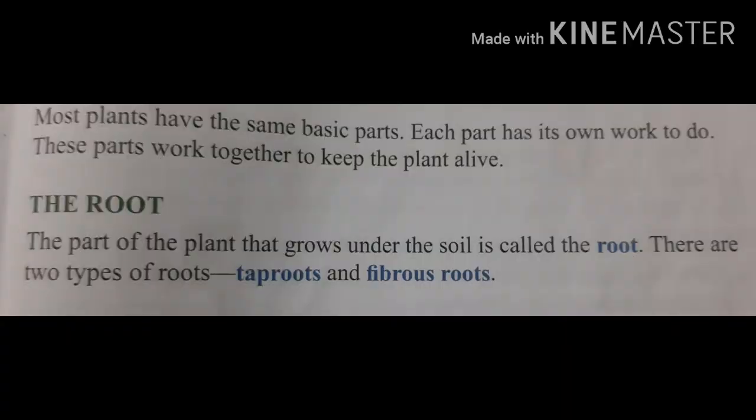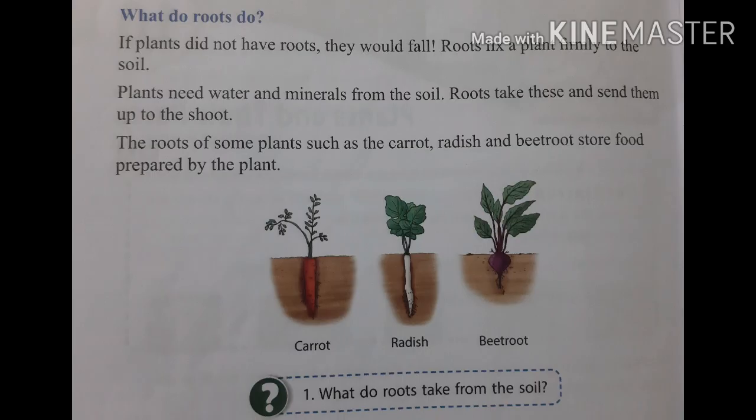Most plants have the same basic parts, and each part has its own work to do. These parts work together to keep the plant alive. The part of the plant that grows under the soil is called root. There are two types of roots — tap root and fibrous root. Roots fix a plant firmly to the soil, and roots take water and minerals and send them up to the shoot. The roots of some plants such as carrot, radish, and beetroot store food prepared by the plant.